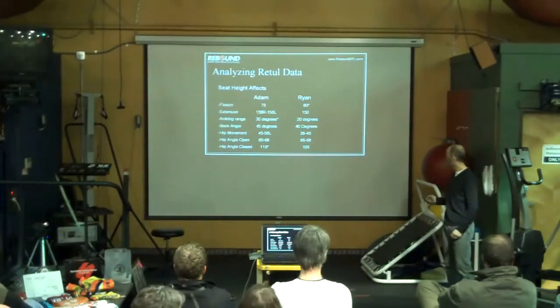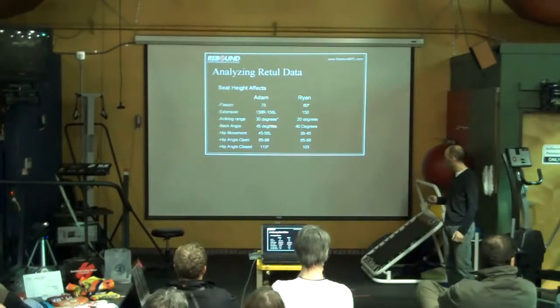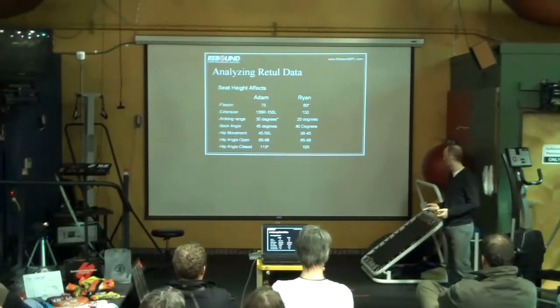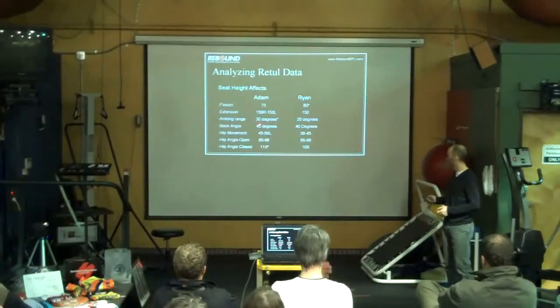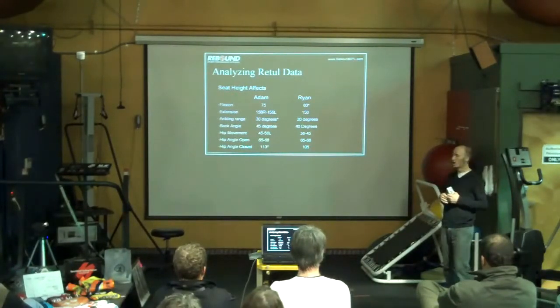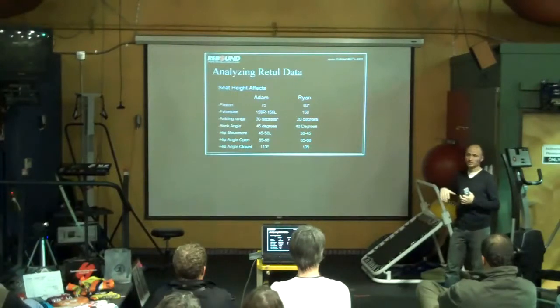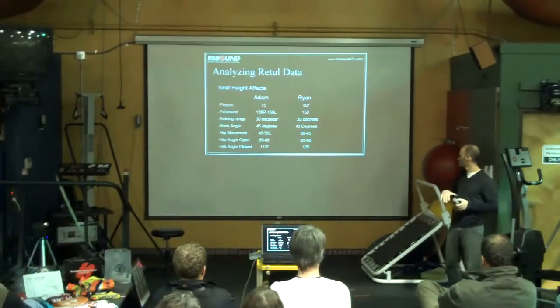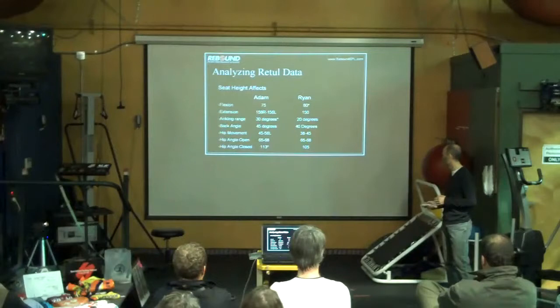Now biomechanically, a lot of people can ride a little higher saddle, and you can make up for it with your ankling. So we see, this is what we would expect, is that Adam has a little bit more ankling. He's closing down his dorsiflexion a little bit more over the top and opening his plantiflexion more at the bottom of the stroke.